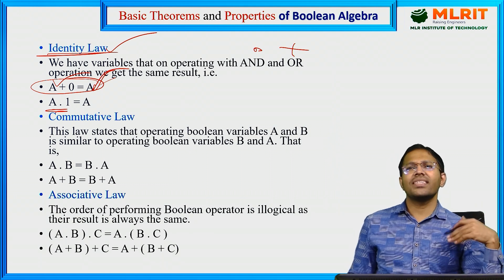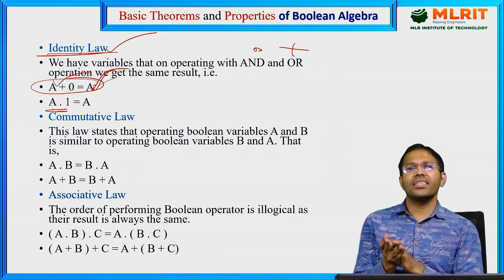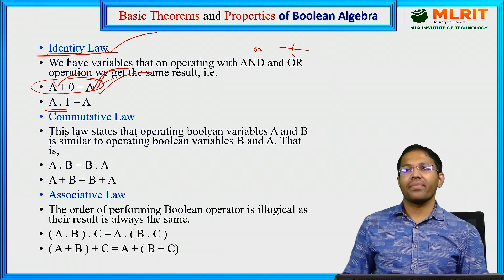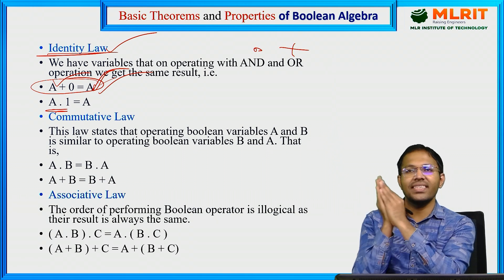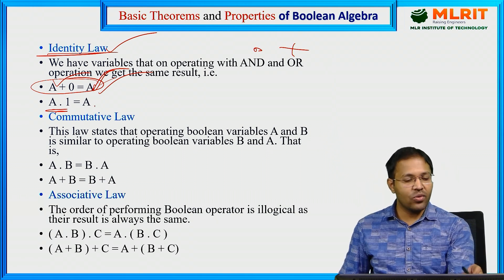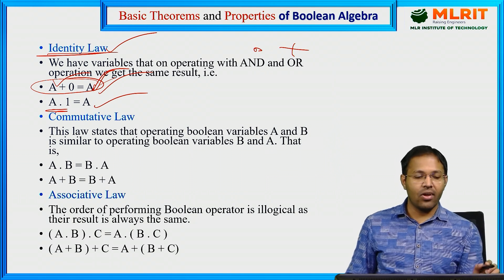You get back A, you get the same A. Likewise, it is very simple, similar to your regular algebra. Anything plus 0, you get the same thing. A plus 0 gives us A. Again, anything multiplied by 1 gives us the same variable. A into 1 gives us A. Similar to regular algebra, we have identity law here.